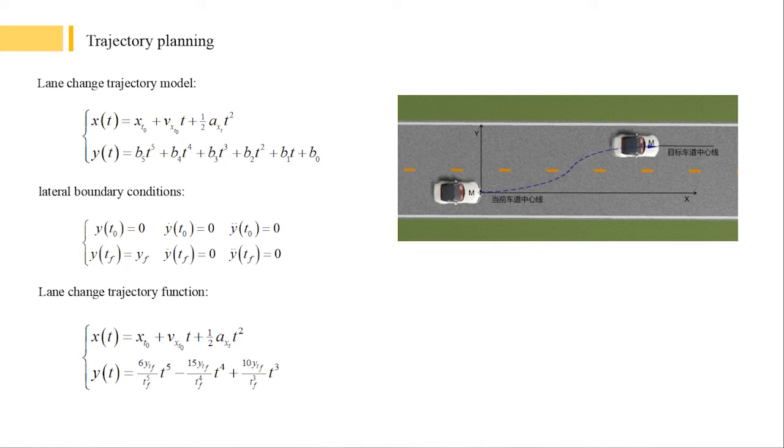The following lateral boundary conditions are designed in combination with the driving state of the lane change vehicle. At the initial moment of lane change, the vehicle is driving on the centerline of the current road at a constant speed.